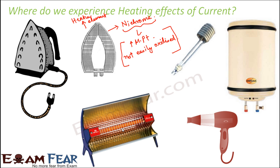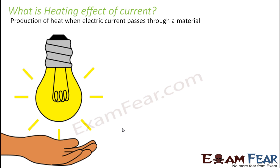Now that we have looked at many applications of the heating effect of current, how do we define it? The heating effect of current is the production of heat when electric current passes through a material. When electric current passes through the filament of a bulb, heat is produced due to this current, which we feel when we keep our hand near the bulb.